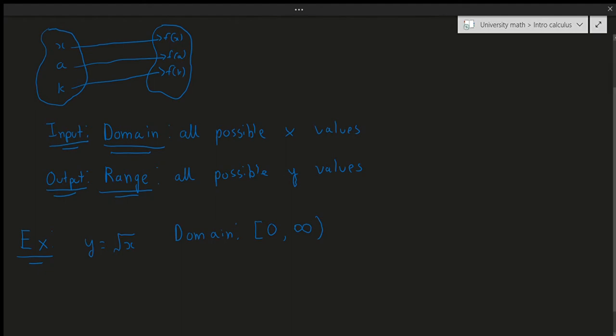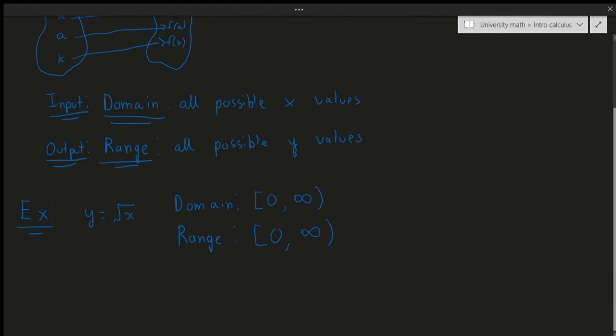The range, on the other hand, is essentially the same thing. If I plug in the square root of zero, I get zero. And the square root of infinity is still going to be infinity. So, in this situation, the domain and range are exactly the same: both are [0, ∞).